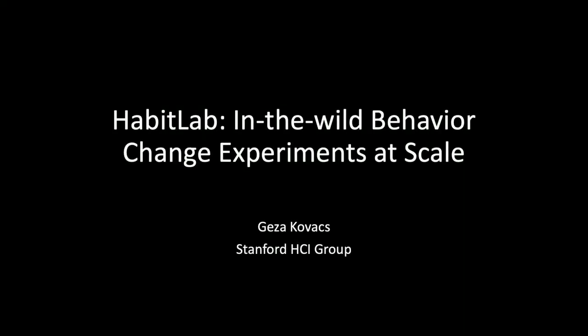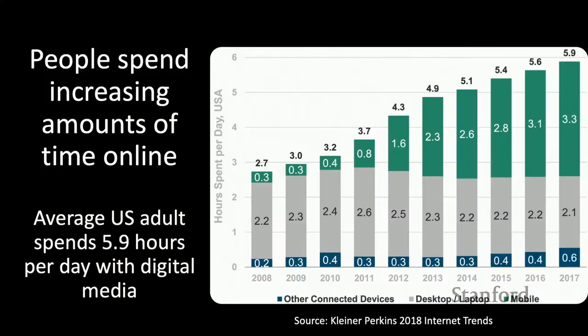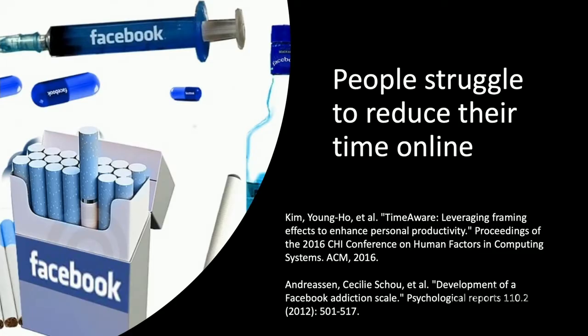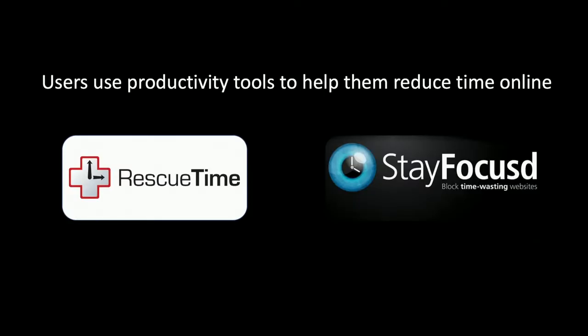In this talk, I'm going to be discussing HabitLab, which is a behavior change system, and a number of in-the-wild behavior change experiments that we have conducted on this platform. The underlying motivation here is that people are spending increasing amounts of time online, with the average US adult now spending nearly six hours a day with digital media, and this number is only increasing with time.